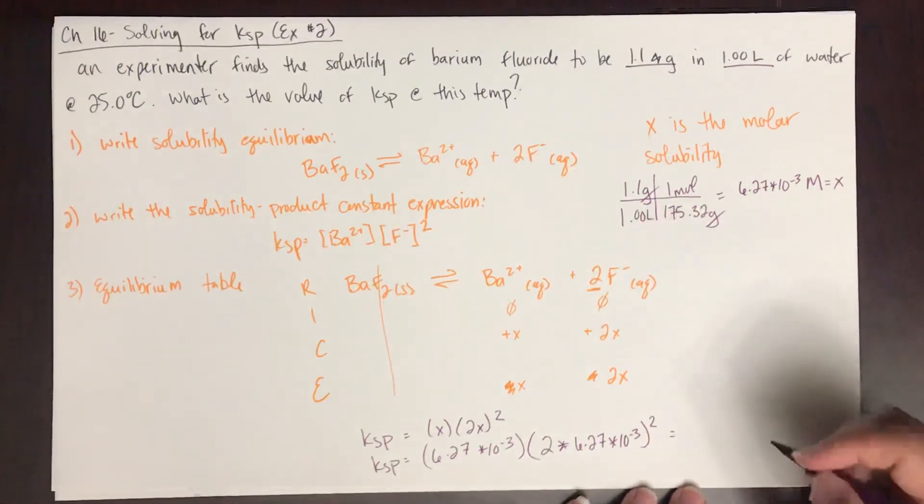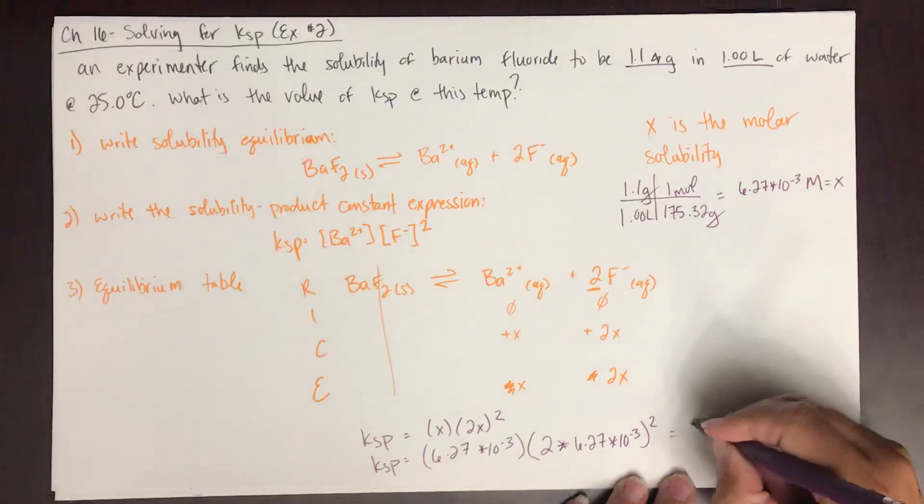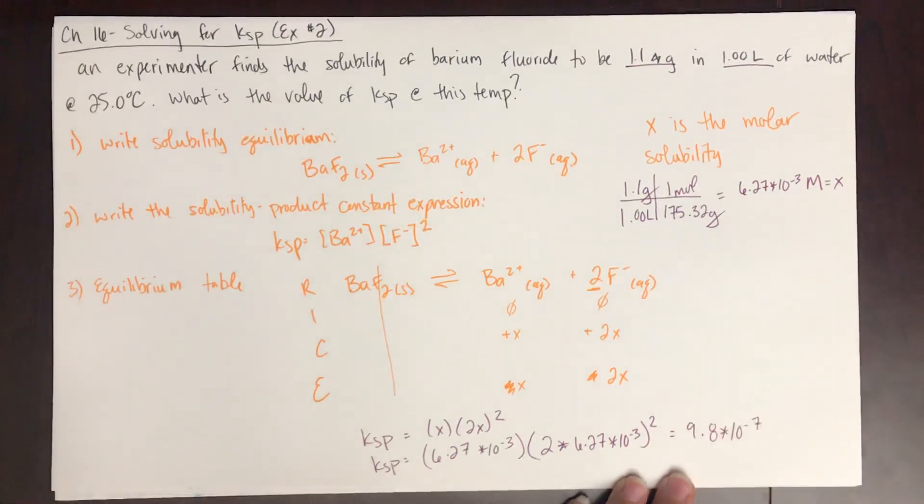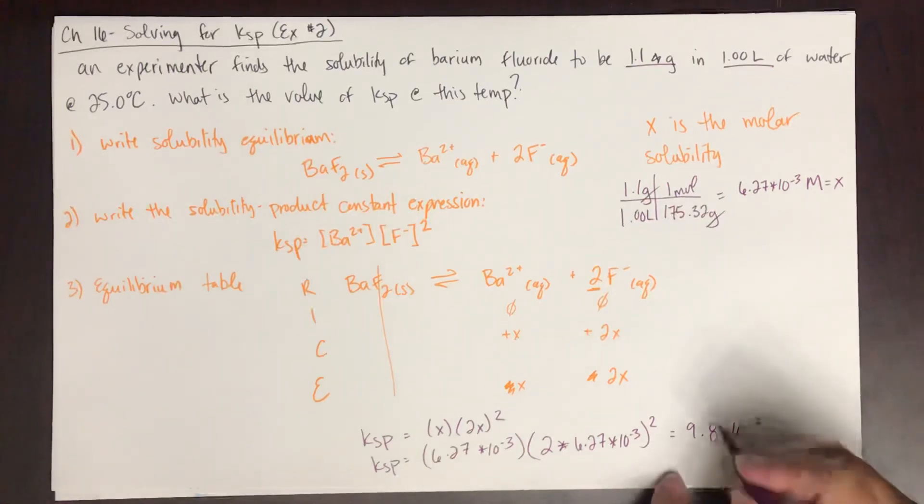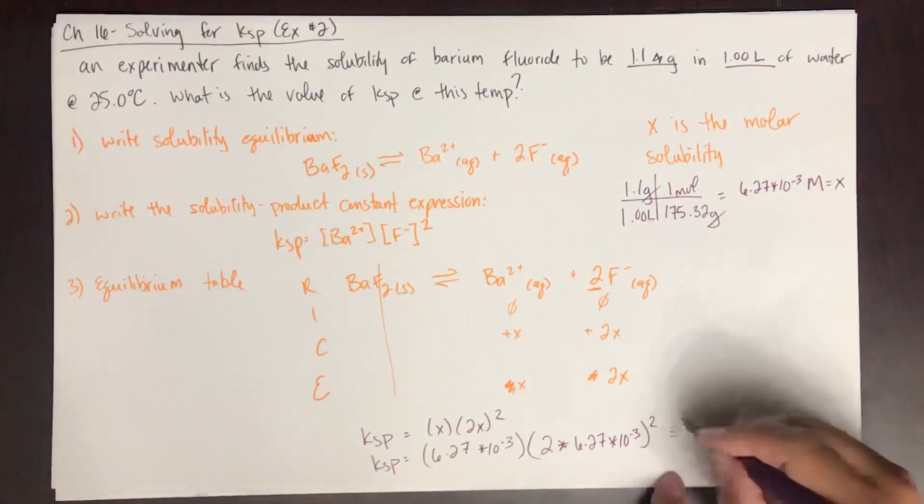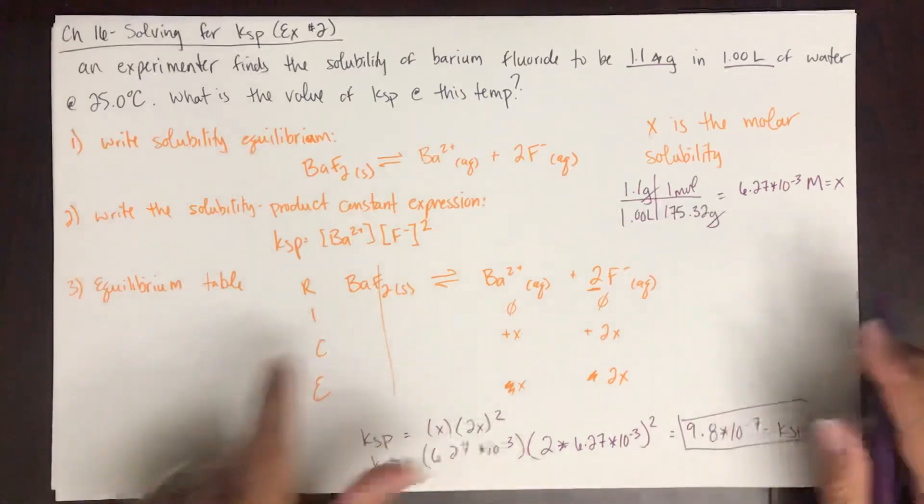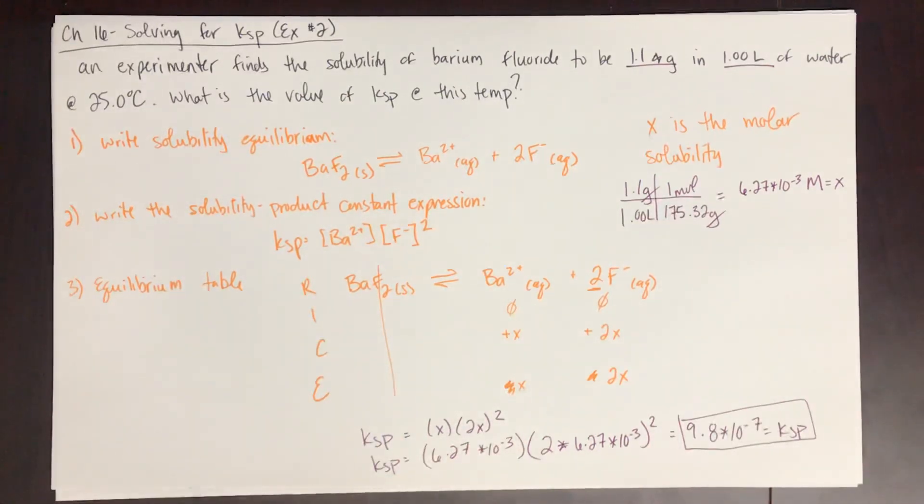So when you do this, you get 9.8 times 10 to the negative 7th. And that is the KSP for barium fluoride.